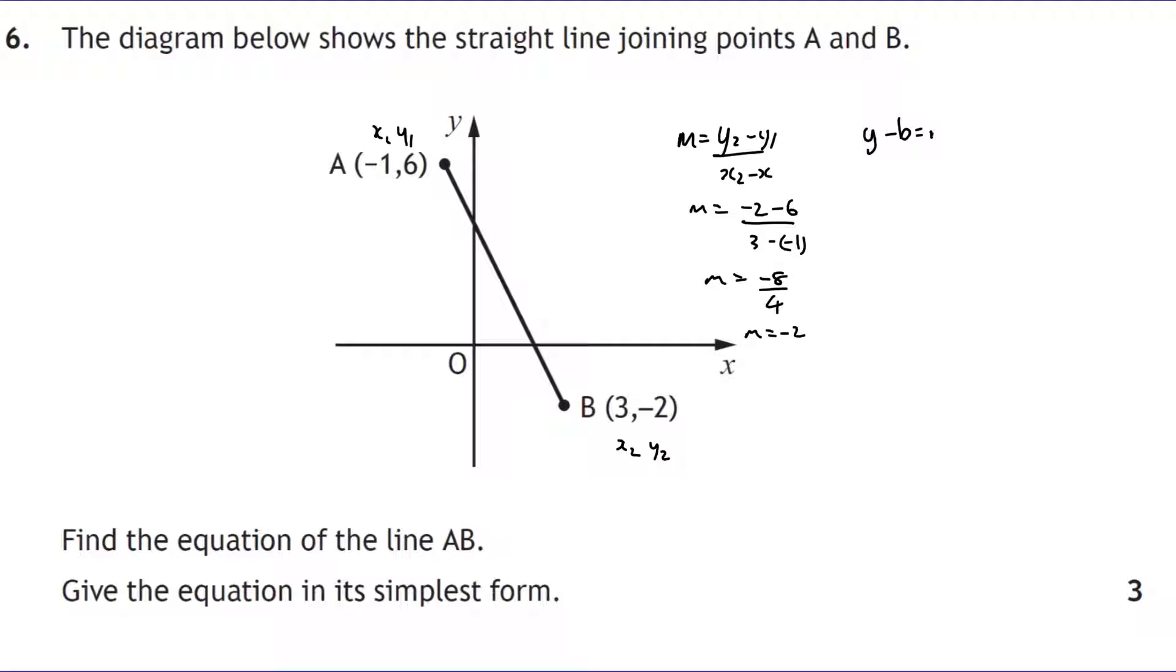We then use the y minus b equals m bracket x minus a. There are alternative ways of doing this, but I'm just going to choose this because we've not got a y-intercept. So I'll call that my a and b value. I could use this coordinate if I wanted. I've just chosen the negative 1 and 6. So y minus 6 equals negative 2 bracket x, negative negative 1 will be a plus 1 in the bracket. So y minus 6 equals negative 2x minus 2. The negative 2 times the 1 gives you negative 2. And then add 6 to both sides to get negative 2x plus 4 as our final equation.